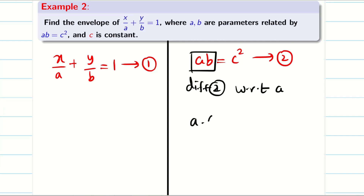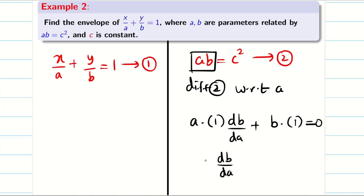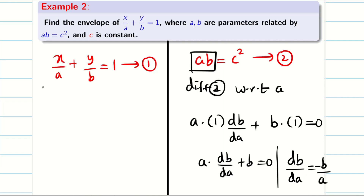We have to use the uv rule (product rule). Differentiating ab = c² with respect to a: a · (db/da) + b · 1 = 0. So db/da · a + b = 0. From this we get db/da = −b/a. We now have the important relation db/da = −b/a.